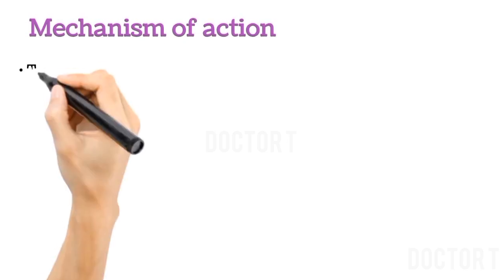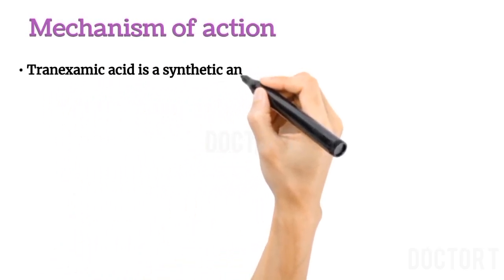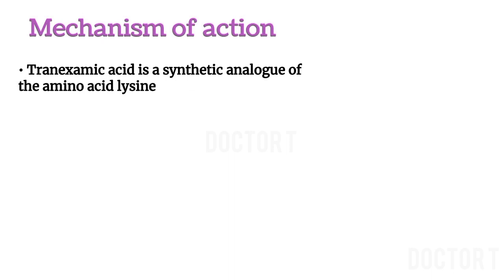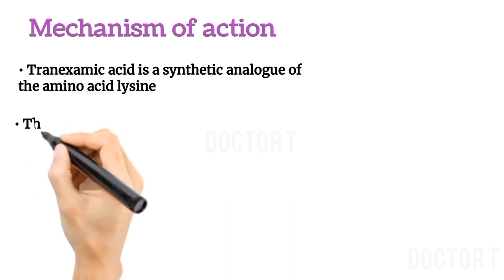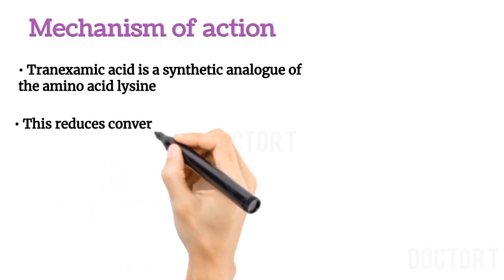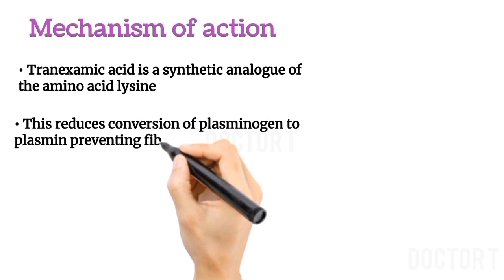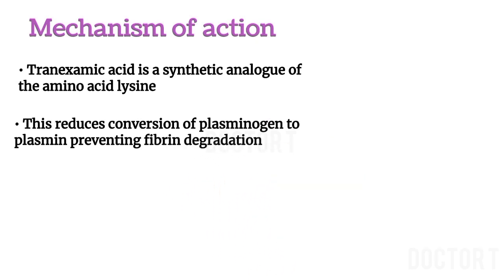Mechanism of Action: Tranexamic acid is a synthetic analog of the amino acid lysine. It serves as an antifibrinolytic by reversibly binding 4 to 5 lysine receptor sites on plasminogen. This reduces the conversion of plasminogen to plasmin, preventing fibrin degradation and preserving the framework of fibrin's matrix structure.